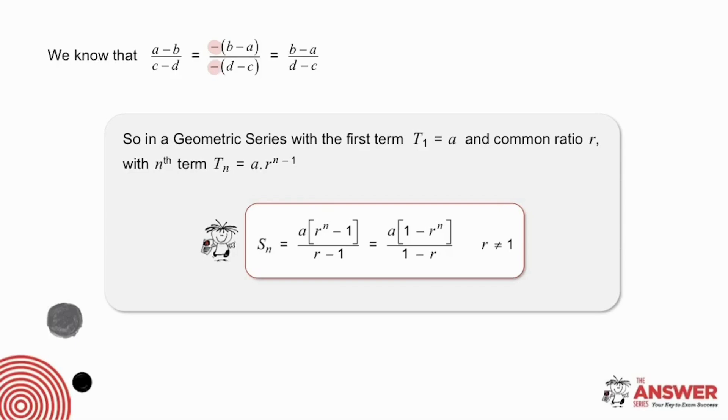The negative divided by the negative will give us a positive, so we would end up with b minus a over d minus c. In other words, if we reverse the order of the terms in the numerator and in the denominator, we end up with a fraction which has exactly the same value.